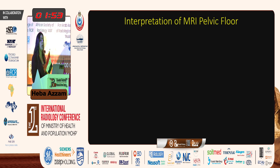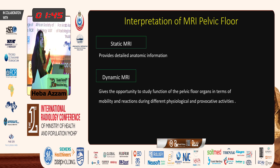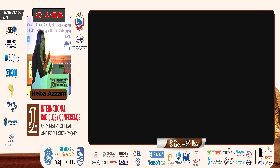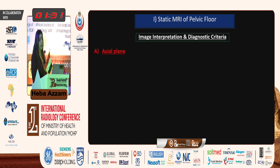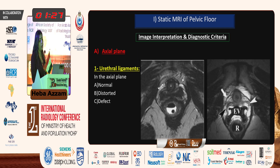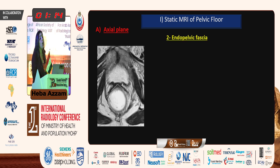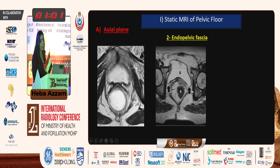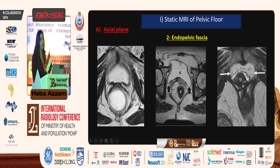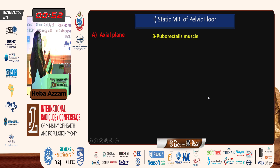Now, how to interpret an MRI of the pelvic floor. Static MRI provides detailed anatomical information, while dynamic MRI gives the opportunity to study the function of pelvic floor organs in the form of mobility and reaction during different physiological and provocative activities. In the axial plane, we can assess the urethral ligaments, the endopelvic fascia defects — Level 1 (chevron sign), Level 2 (saddle back sign), Level 3 (drooping mustache sign) — and the puborectalis muscle for defects such as unilateral or bilateral detachment from the pubic bone.